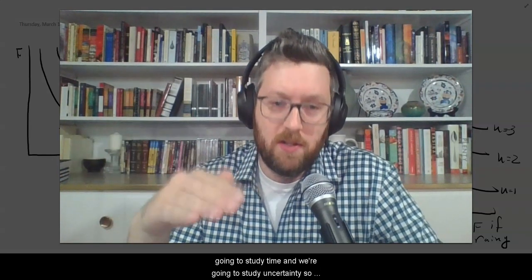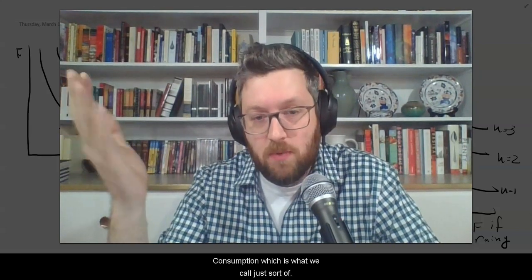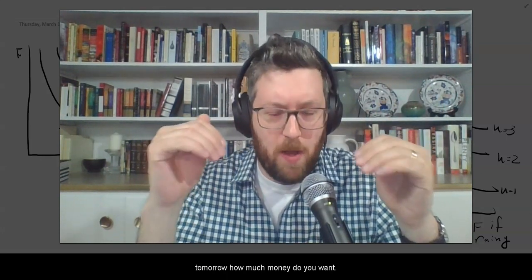And in this section, we're going to study time and we're going to study uncertainty. So we're going to just look at one good and we're not going to look at food or shelter. We're going to look at something even more general than that. We're going to just look at consumption, which is what we call just sort of stuff. You can almost think of it as just money. How much money, for example, do you want today versus tomorrow? How much money do you want in one state of the world versus another?